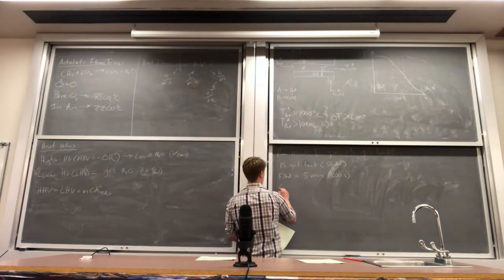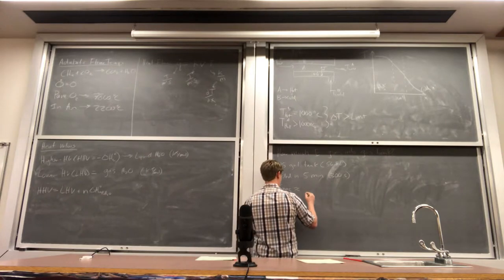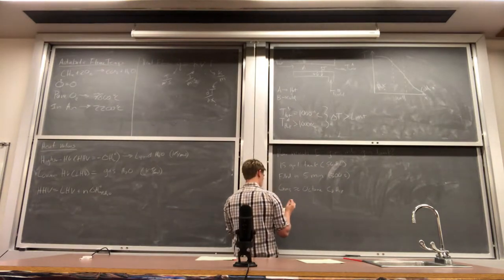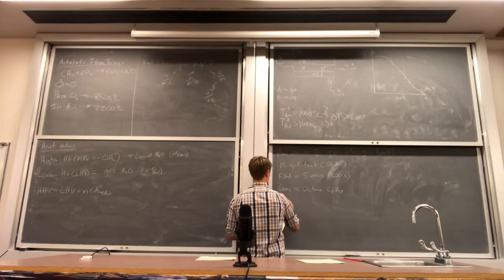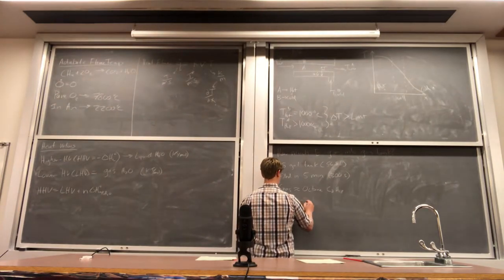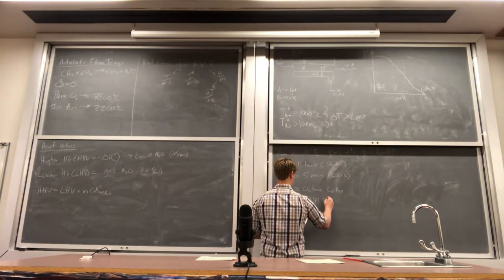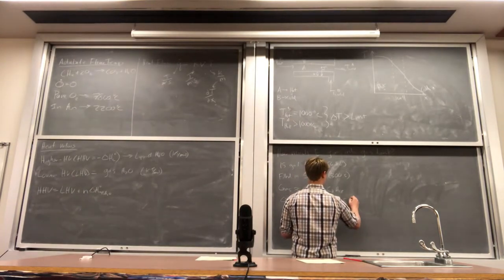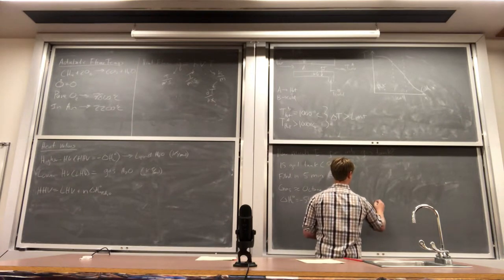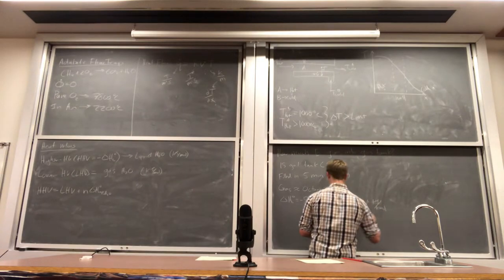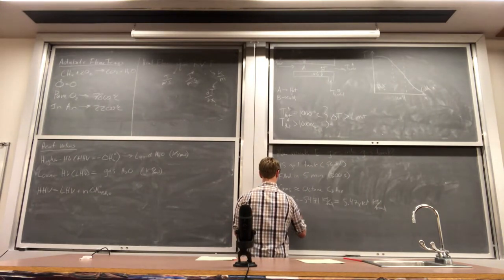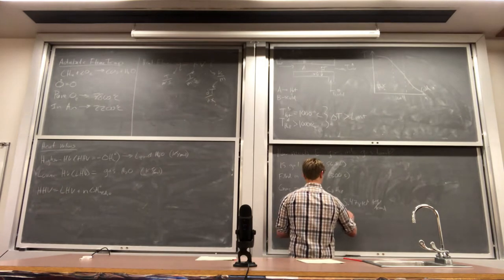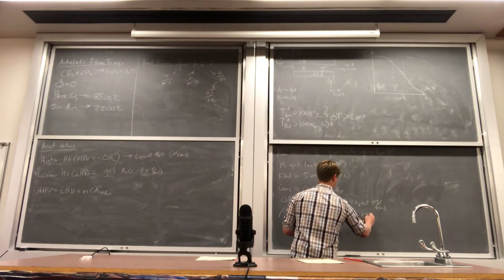So let's say we have a 15-gallon tank which is 56.8 liters and we fill that in five minutes which is 300 seconds. We're going to approximate gasoline as octane and the material properties, the delta H of combustion of octane is minus... So I'm going to write this as 5.47 times 10 to the 6 kilojoules per kilomole. Its density is equal to 0.703 kilograms per liter and its molecular weight is 114.2 kilograms per kilomole.